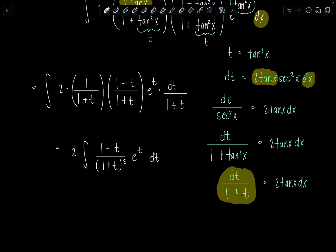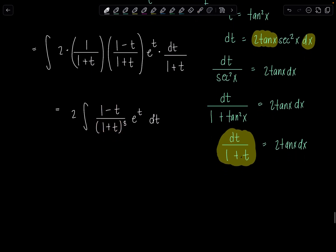Here we go. So we've got 2. This is going to become dt over 1 plus t. But right now I just have 1 over 1 plus t times 1 minus t over 1 plus t. E to the t and then 2 tan x dx is dt over 1 plus t. How are we doing? Okay, notice now we've got 1 plus t three times in the denominator. So let me put those together. So we've got integral. Let's put the 2 outside. 1 minus t up top. 1 plus t cubed and then e to the t dt.